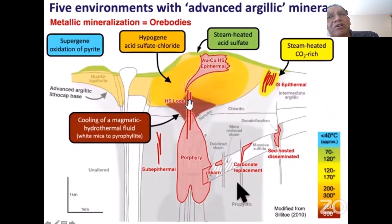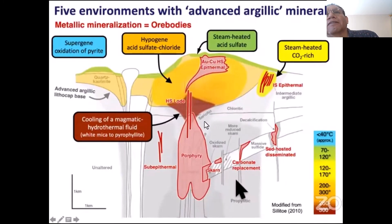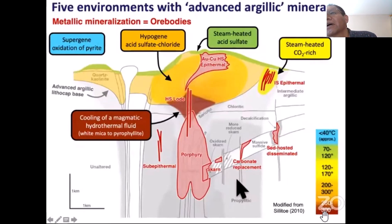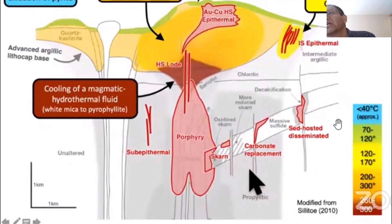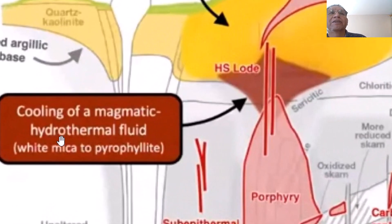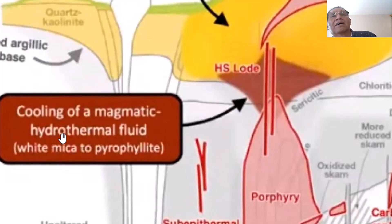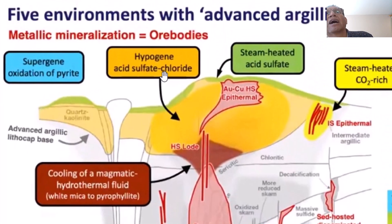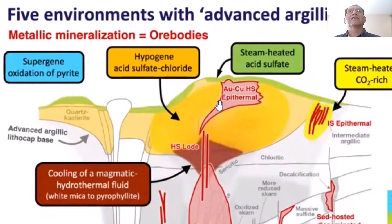This is the five processes involved in the development of advanced argillic minerals. It starts at the highest temperature — 300 degrees — and the lowest temperature will be minus 40 degrees. Number one is cooling of magmatic hydrothermal fluid, producing white mica and topaz-phyllic, at temperatures less than 300 degrees. Going up, we have this steam-heated acid sulfate by the feeder, which is going to generate gold-copper high sulfidic epithermal. The third style is hypogene acid sulfate chloride — one of the sites in the system.